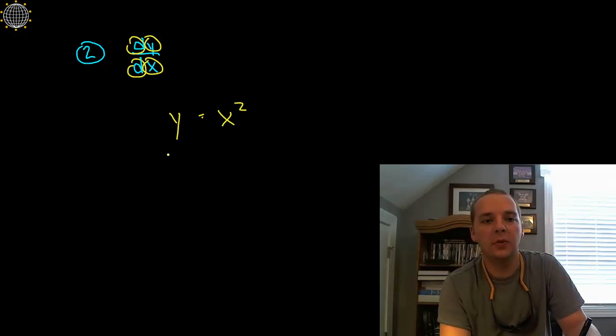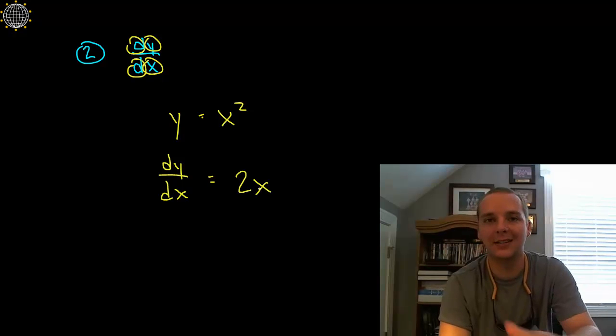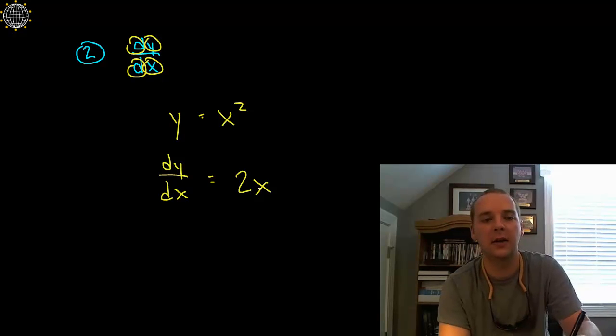If y equals x squared, we would say dy dx, which is read in English as the derivative of y with respect to x would be 2x. The derivative is taken exactly the same way, it's just a new notation, just a new way of writing things down.